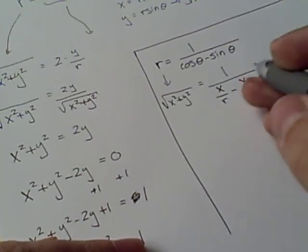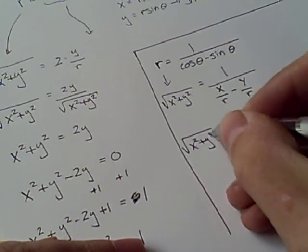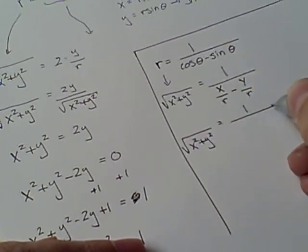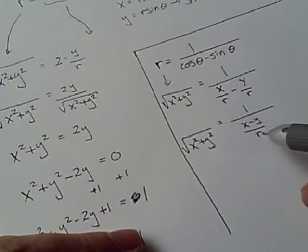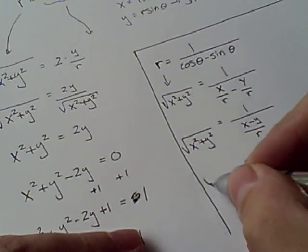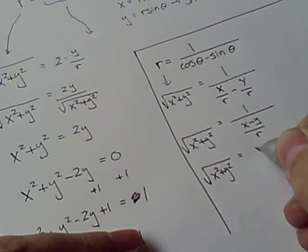Now, we can combine those two terms because they have the same denominator. So, this is 1 over x minus y over r. And then we can take the reciprocal of this term and multiply. So, x squared plus y squared equals r over x minus y.